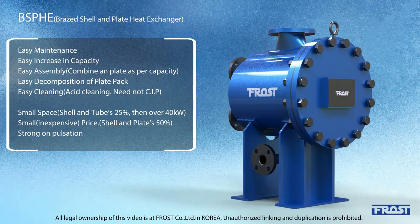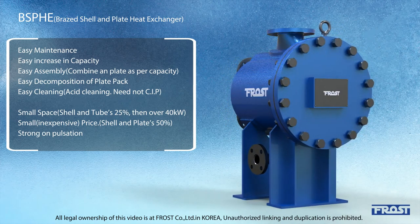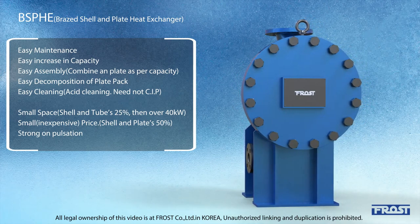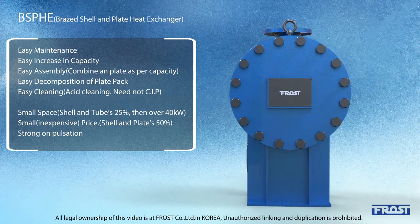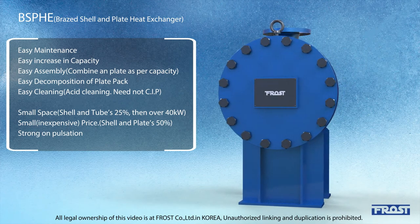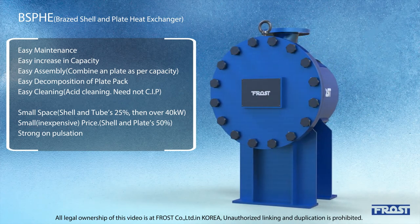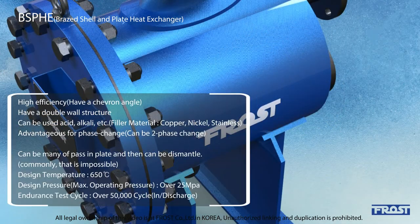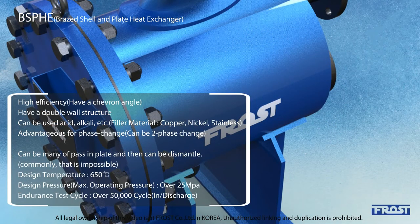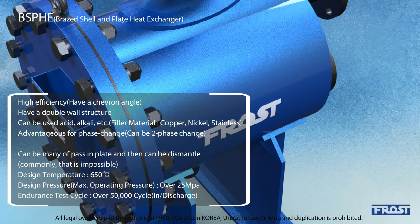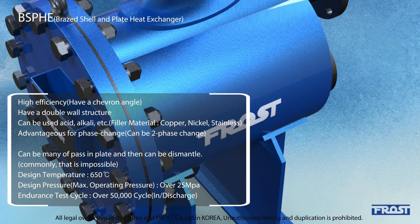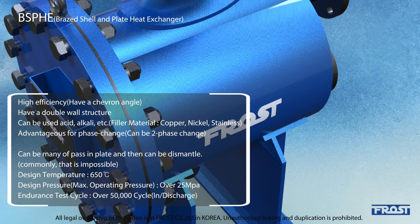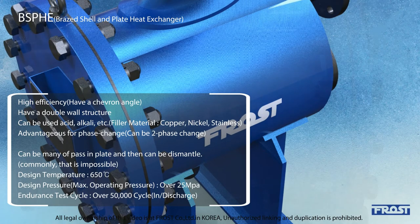B.S.P.H.E. — Brazed Shell and Plate Heat Exchanger Representative Features: 5E and 3S. 5E stands for Easy Maintenance, Easy Increase in Capacity, Easy Assembly — combine a plate as per capacity, Easy Decomposition of Plate Bundle, and Easy Cleaning — acid cleaning not needed for CIP.